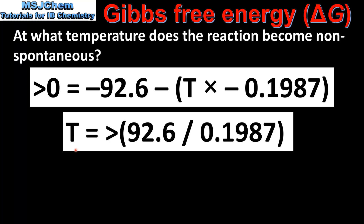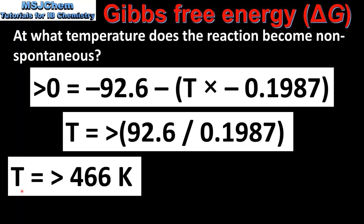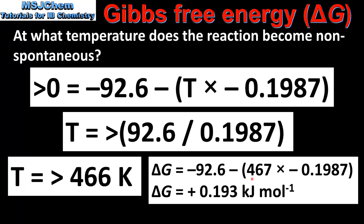When we rearrange the equation, we get that the temperature at which the reaction becomes non-spontaneous is greater than the change in enthalpy divided by the change in entropy. This gives us a temperature of greater than 466 Kelvin. To check our answer, we can put this temperature into the equation. When we solve for delta G we get a value of positive 0.193 kilojoules per mole. This positive value for delta G tells us that the reaction is non-spontaneous at temperatures greater than 466 Kelvin.